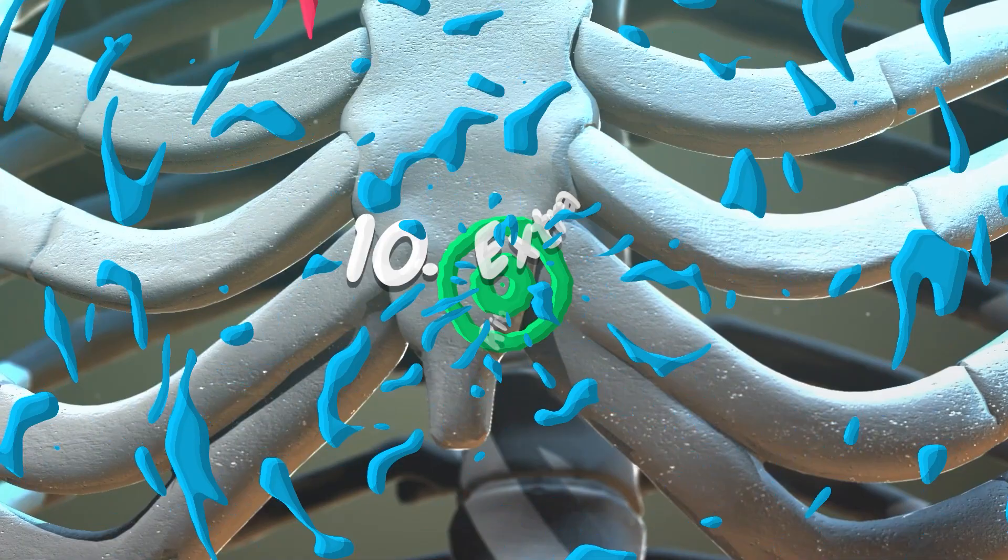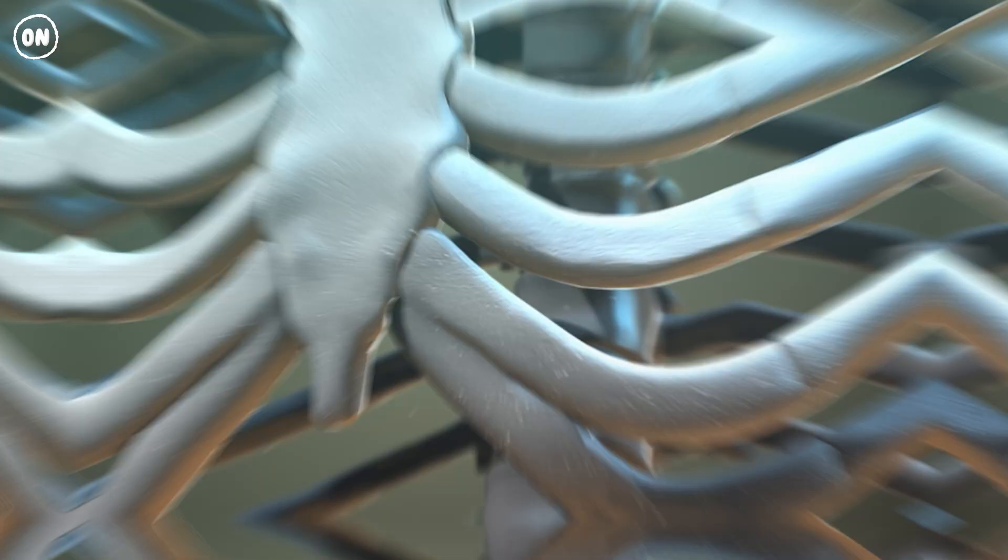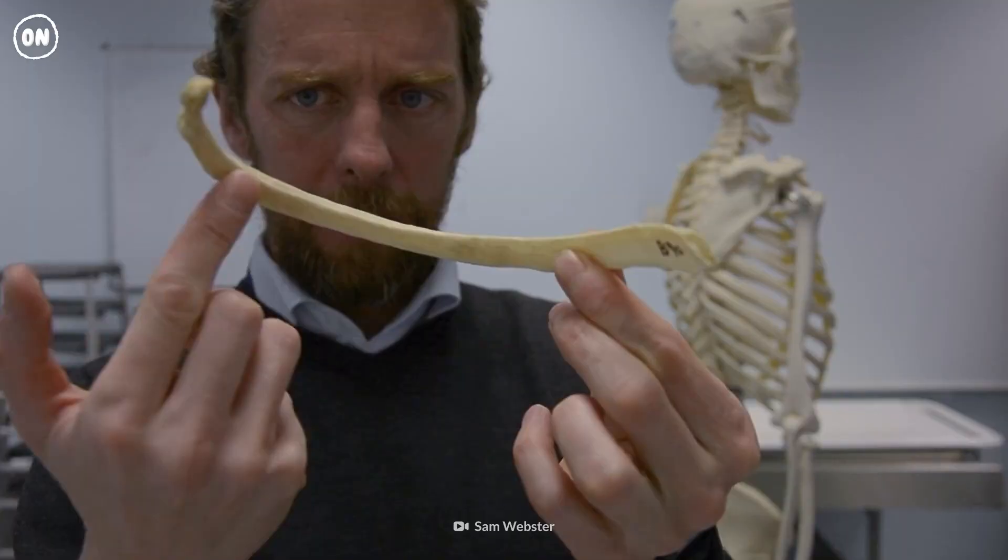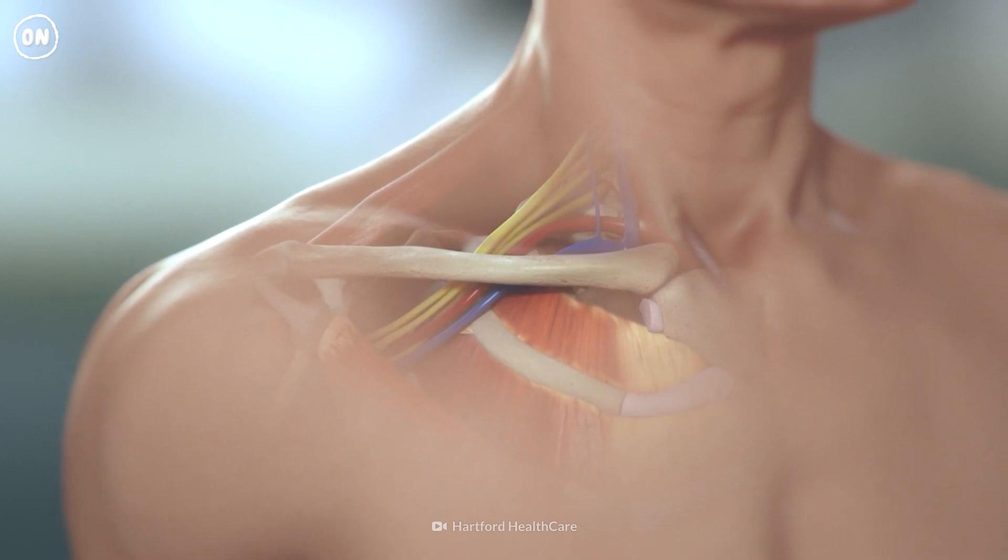Number 10: Extra Rib. Most of us are born with 12 pairs of ribs in our chest, but about 1 in every 200 people are born with an extra rib, known as a cervical rib.